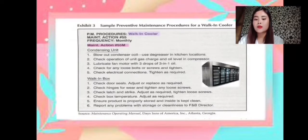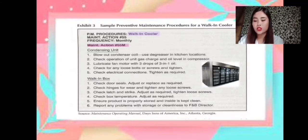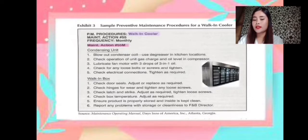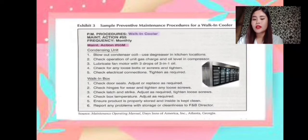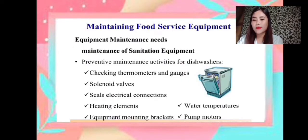In the walk-in box: 1. Check door seals, adjust or replace as required. 2. Check hinges for wear and tighten any loose screws. 3. Check clutch and strike, adjust as required. 4. Check box temperature, adjust as required. 5. Ensure product is properly stored and inside is kept clean. 6. Report any problems with storage or cleanliness to the F&B director.